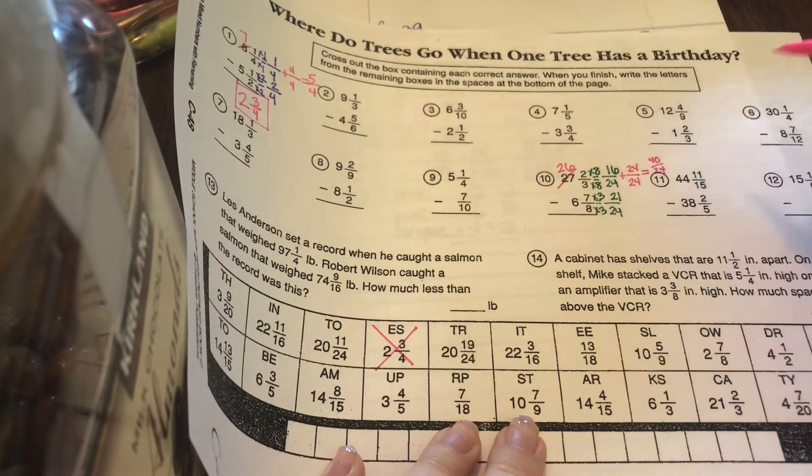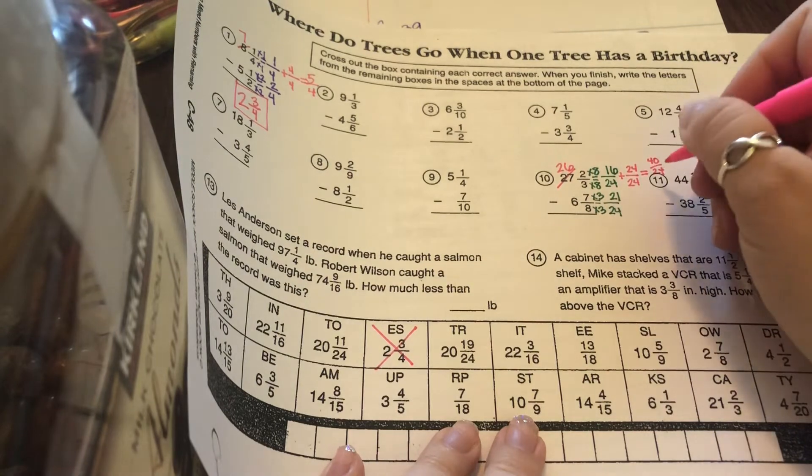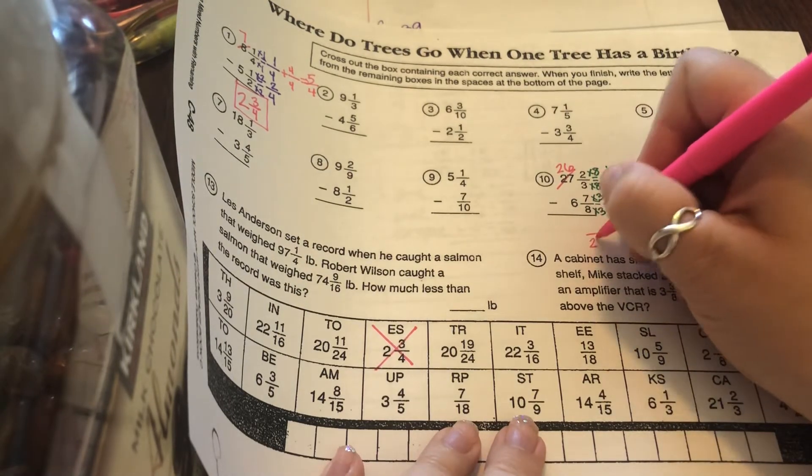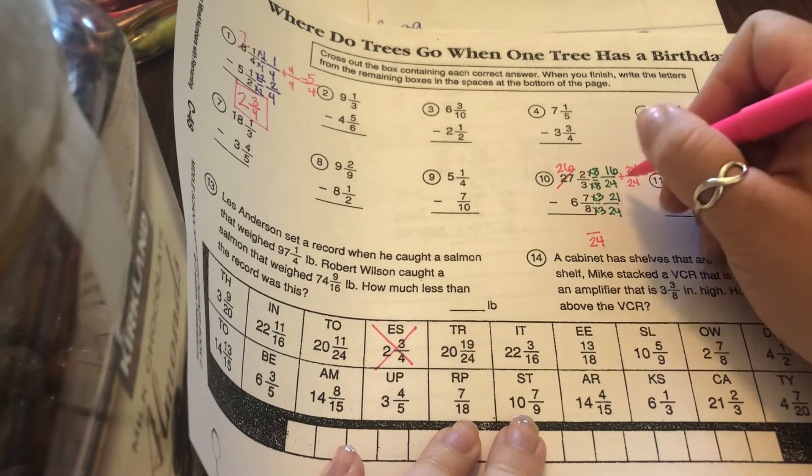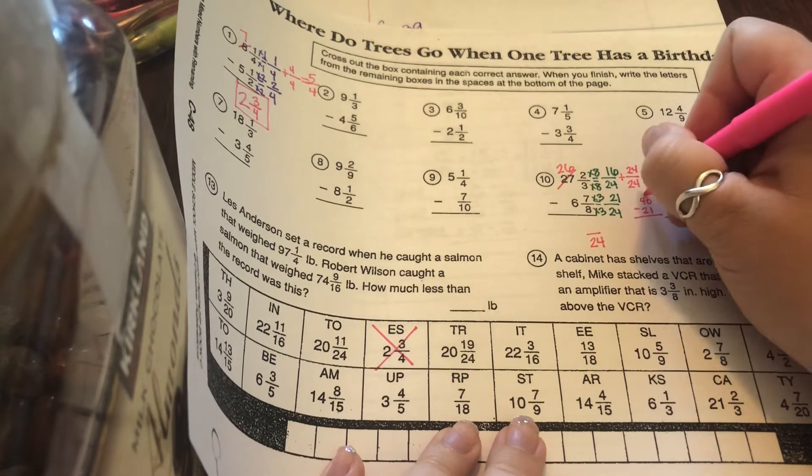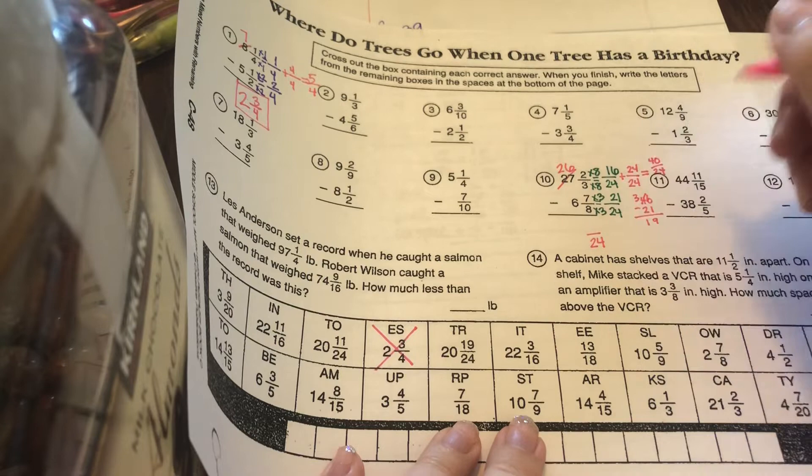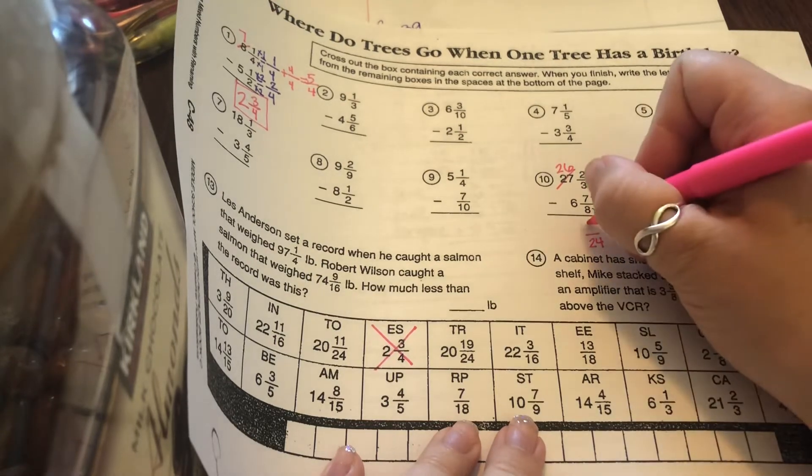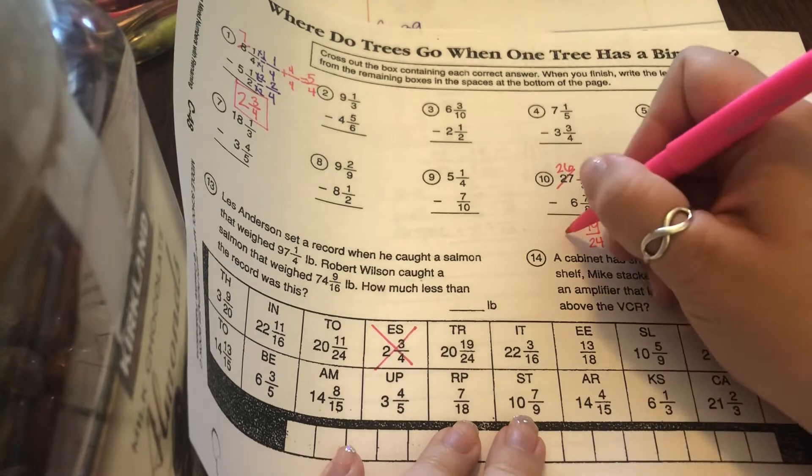Don't be afraid to do scratch work off to the side if you need to rather than doing it in your head so you don't make silly errors. Now, you keep the denominator the same, and you have a big enough numerator of 40 to take 21 away from. Speaking of doing scratch work off to the side, 10 minus 1 is 9. 3 minus 2 is 1. So, 40 minus 21 is 19, and then the whole number is 26 minus 6 is 20.